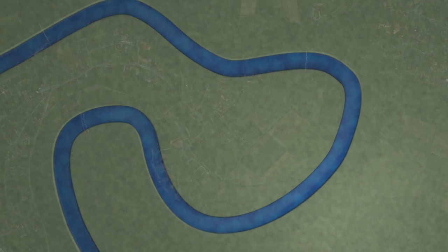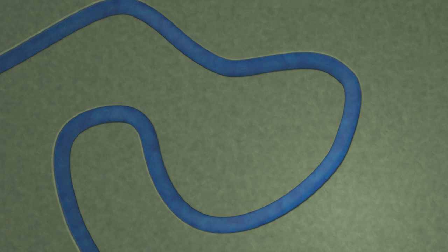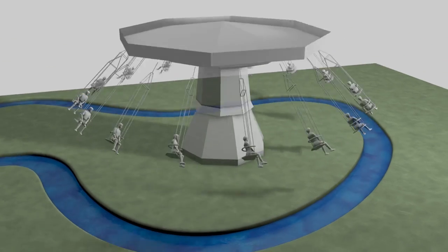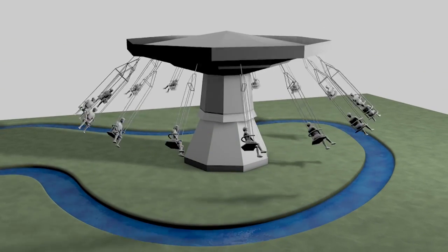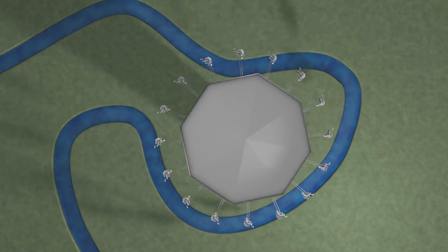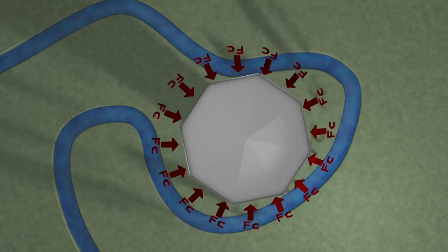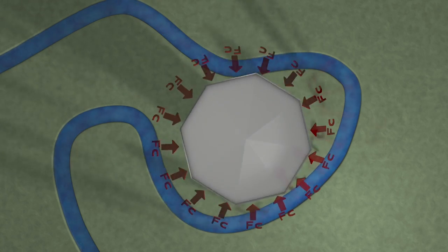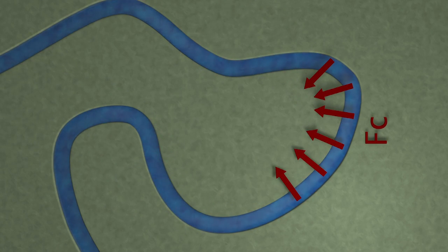Let's have a closer look at an individual bend. Water is turning in a bend, changing the direction of the flow velocity. If an object turns, Newton's second law tells us that there must be a force making it turn, changing the direction of the velocity. This force, called the centripetal force, is directed to the center of the curvature. In the bend, there is a centripetal force changing the direction of the flow velocity.